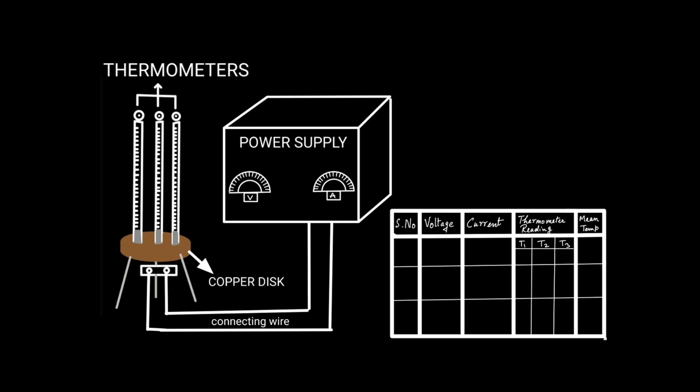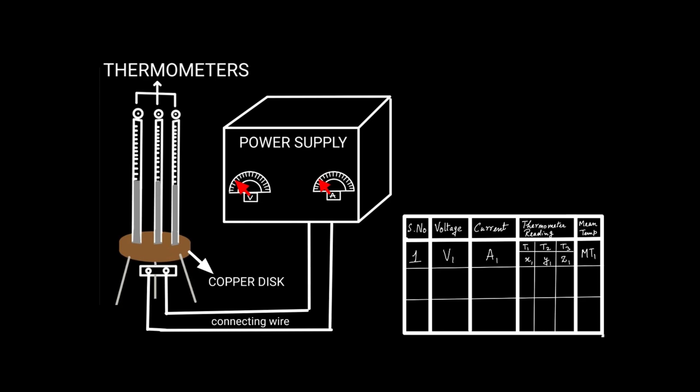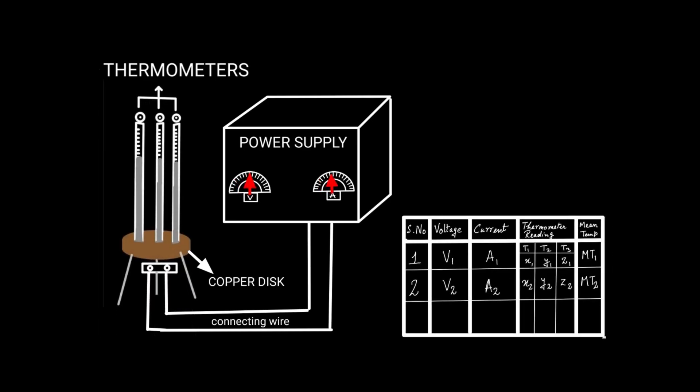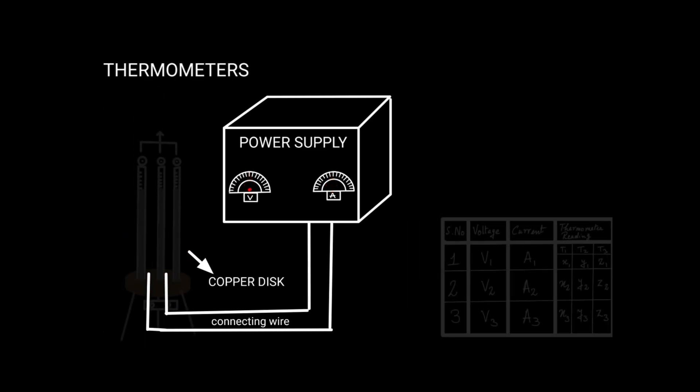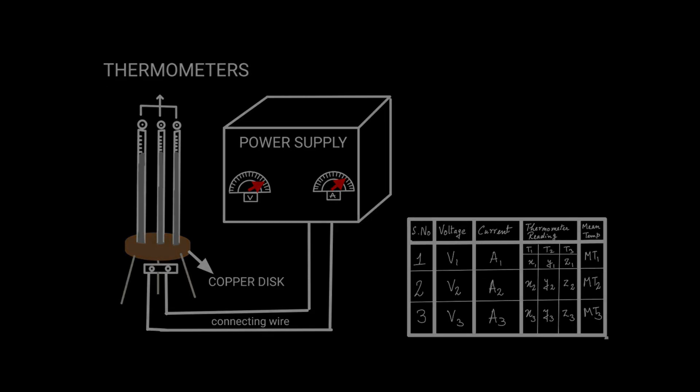For a particular value of voltage and current, you have to note the three readings x1, y1, z1 of these three thermometers. The second reading you have to change the V and take these three readings. Again, for the third value of the voltage, you will take the three readings of the temperature at steady state.